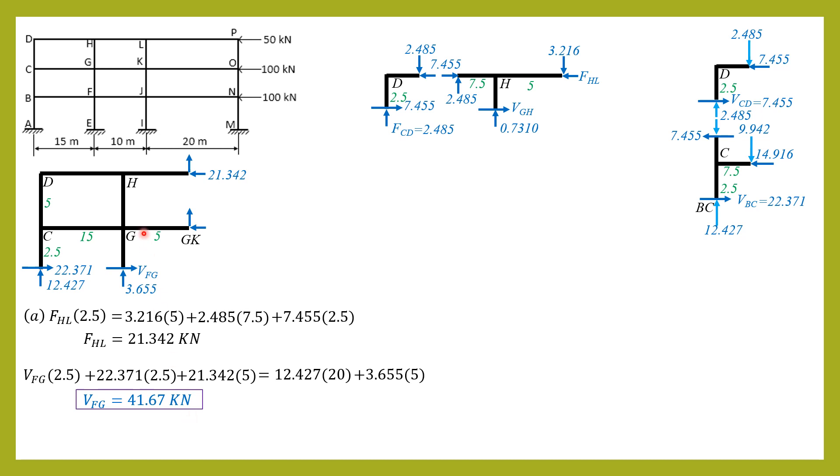Finally, the moment at G is 41.67 times 2.5. So moment in FG is moment at G, moment at F, 41.67 times 2.5. Moment is equal to 104.2 kilonewton meters. That's it for this problem.